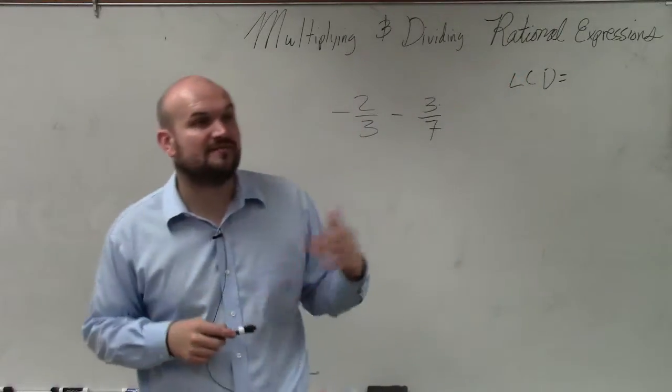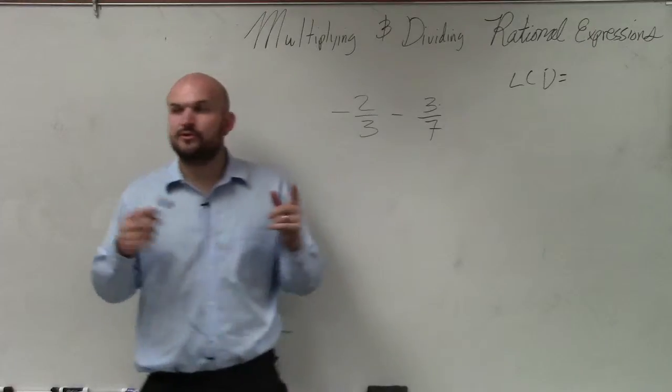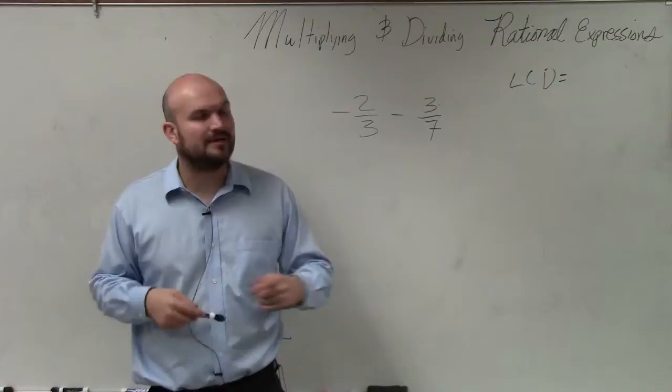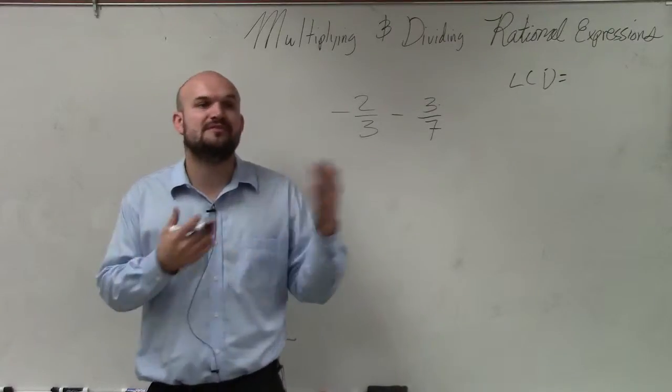However, if I said what's the least common denominator of 9 and 3, you would multiply them to get 27. But 27 is not the least common denominator. 9 is the least common denominator because 9 and 3 both divide into 9.